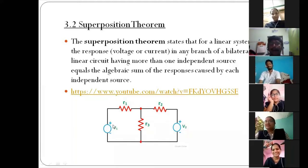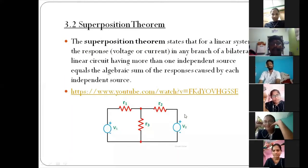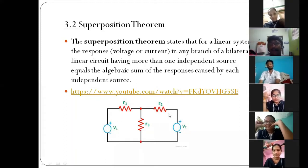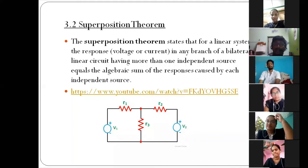Superposition theorem is very important. We calculate two currents — I1 and I2 — by shorting each voltage source in turn. Then we add the two currents: I equals I1 plus I2. That is nothing but the superposition theorem. Remember that point.